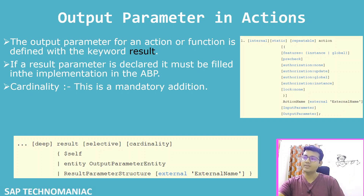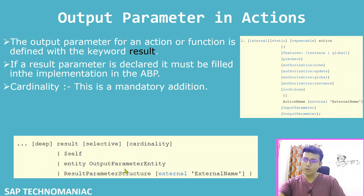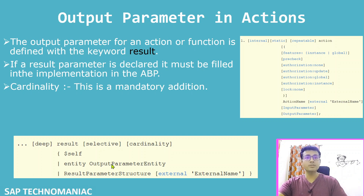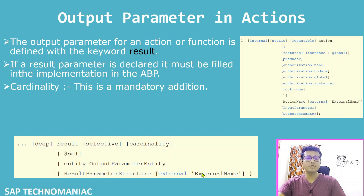The output parameter can be of type one CDS entity. Then you use the 'entity' keyword and give the CDS entity name, which can belong to the same business object or from another business object as well. Or instead of using a CDS entity, you can use the abstract entity — you don't need the entity keyword, you can directly define the abstract entity name.